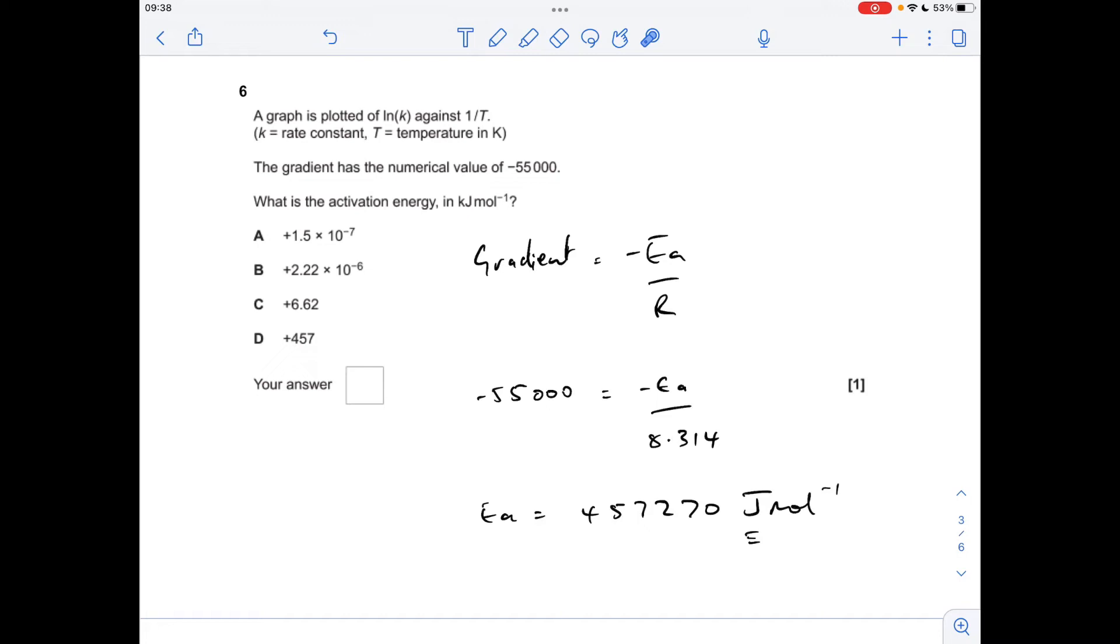Okay, so very similar to the previous Arrhenius question. So remember the gradient equals minus Ea over R. So I've put the numbers in, going to multiply the gradient by the gas constant, going to lose those minus signs. So I'm getting in joules per mole, that number there, divide by 1,000, we're going to get 457 kilojoules per mole. So the answer was D.